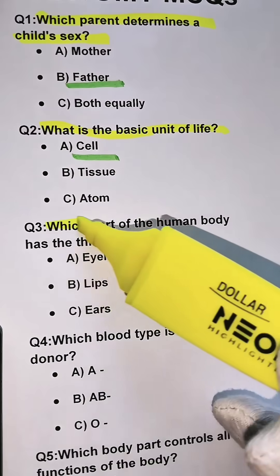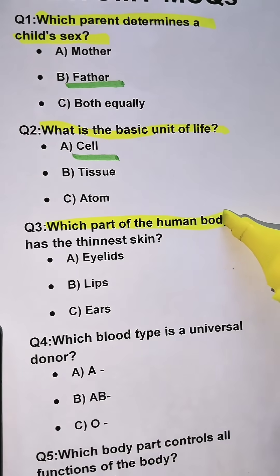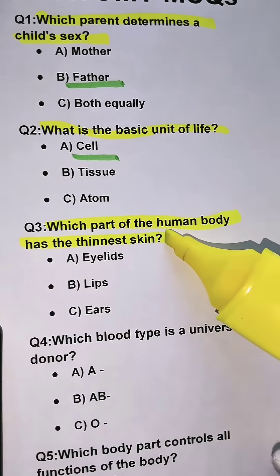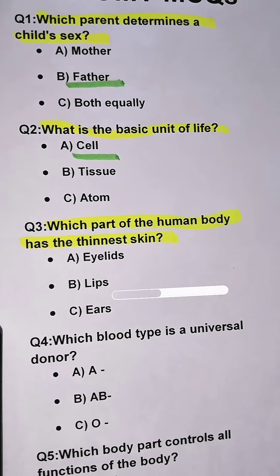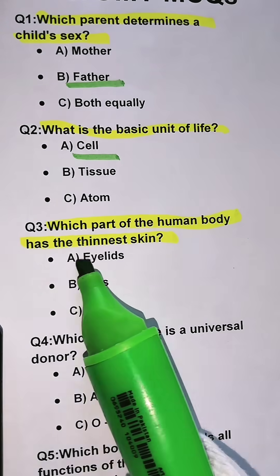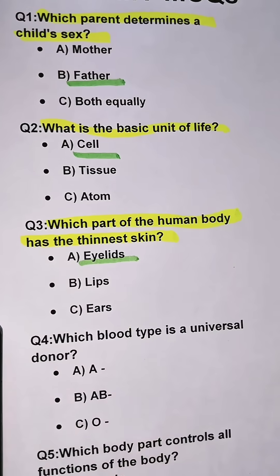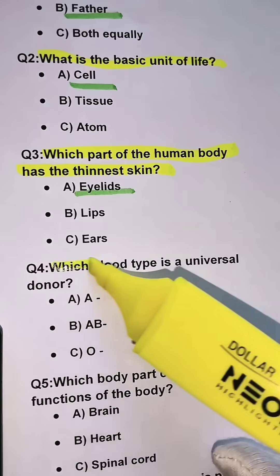Question 3. Which part of the human body has the thinnest skin? Option A. Eyelids.